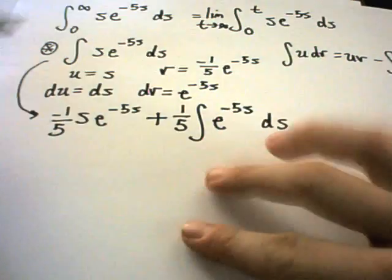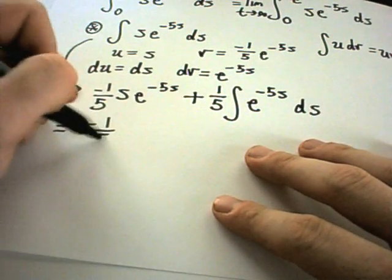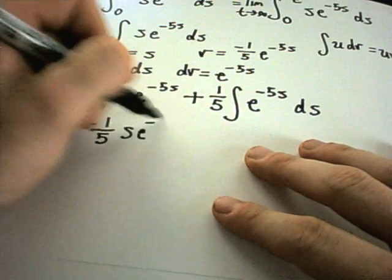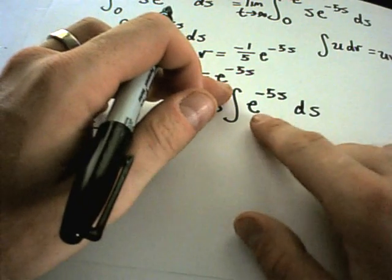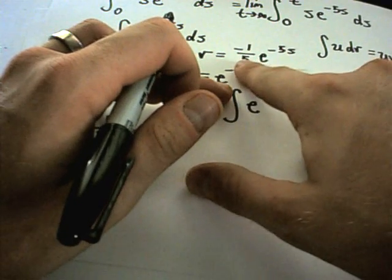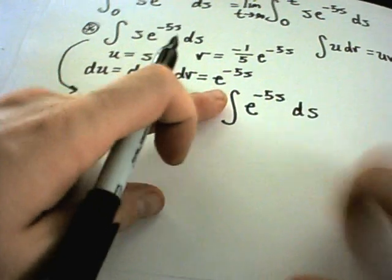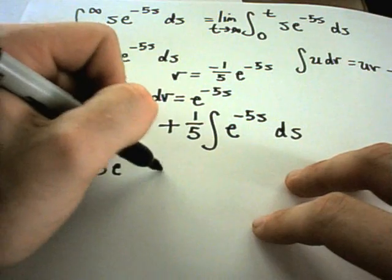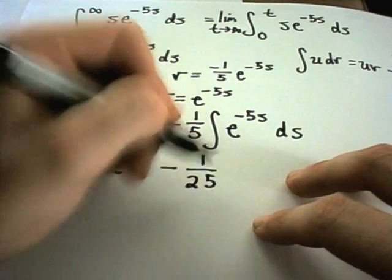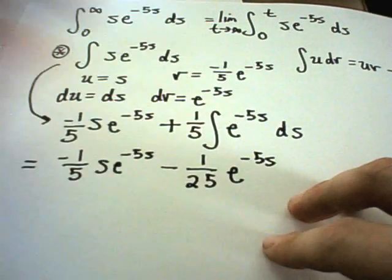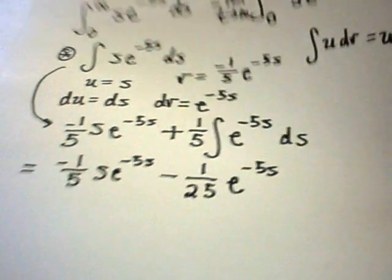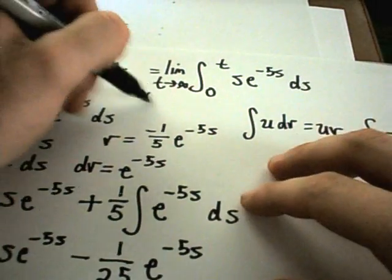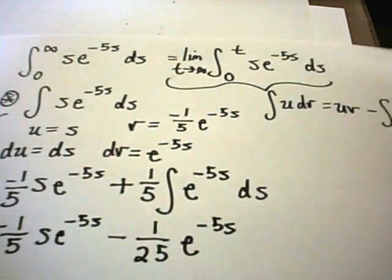Now I integrate that remaining term. The −(1/5)·e^(−5s) piece is along for the ride. Integrating e^(−5s) again gives −(1/5)·e^(−5s). Multiplying −(1/5) by positive (1/5) gives −(1/25)·e^(−5s). So the full antiderivative is −(1/5)·s·e^(−5s) − (1/25)·e^(−5s). I now know what the antiderivative is, so I'll plug it all back in.